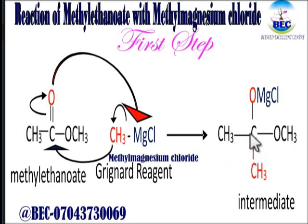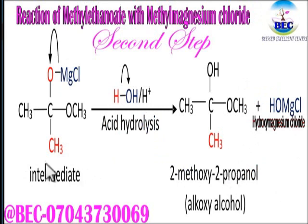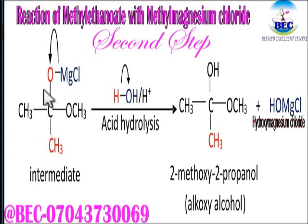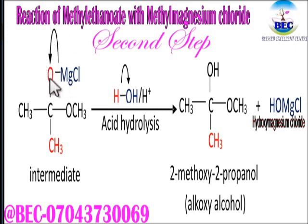Now we'll do the next step. This is the intermediate we formed in the previous step — we repeated everything the way it was in that formula. In this compound, when the bond between oxygen and magnesium is cleaved according to the direction of the arrow, the oxygen in red will be negatively charged and magnesium will be positively charged.